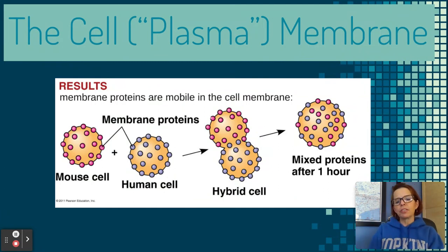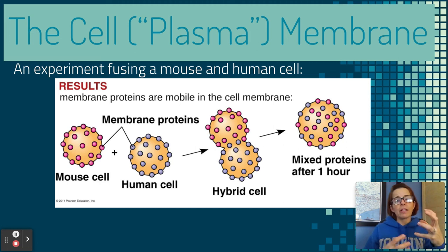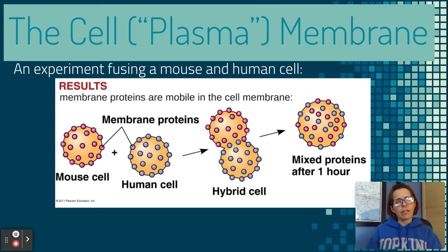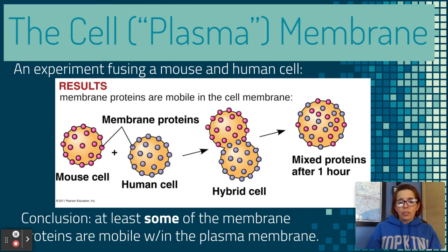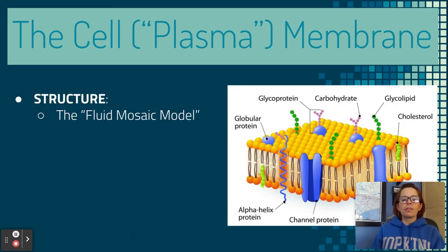Now we're getting into the meat of what you really need to know. There's a super interesting experiment discussed in your book: scientists fused a mouse cell with its own distinctive proteins and a human cell with its own distinctive proteins. After an hour of being merged into a hybrid cell, the proteins were mixed all over. The conclusion is that at least some membrane proteins are mobile within the plasma membrane — they're not fixed in place. That's where we get the fluid mosaic model for the plasma membrane.